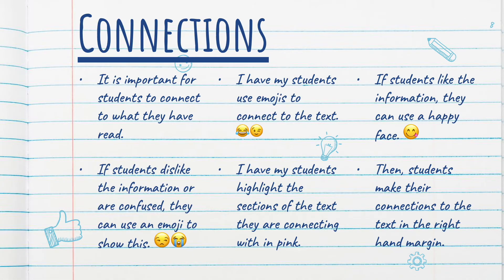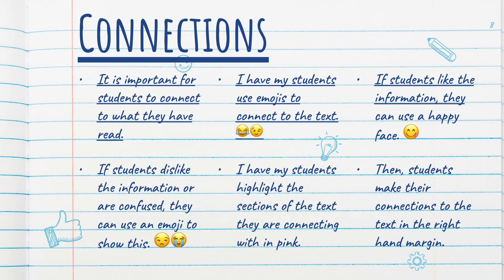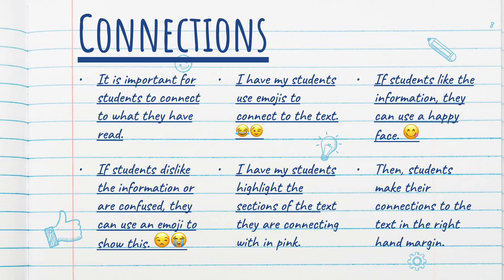Connections. It's important for students to connect to what they've read in order for them to understand it better. I have my students use emojis to connect to the text. If students like the information that they read, then they can use a happy face and show why they like it. If students dislike the information or they're confused by it, they can use an emoji to show this. I have my students highlight the sections of the text that they're connecting with in pink. Then students make connections to the text in the right-hand margin of the text.